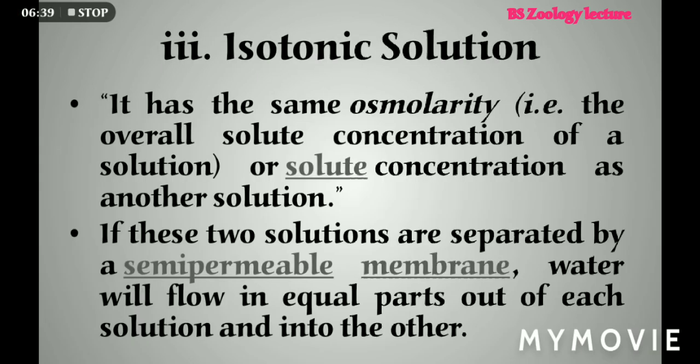The third type of solution is isotonic solution. In this solution, the cell has the same osmolality on both sides — that is, the outer environment and the inner environment of the cell are equal.